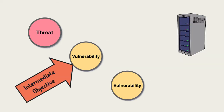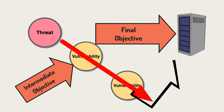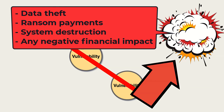Objectives are intermediate and final. Intermediate objectives include exploiting one or more weaknesses in a network, in a user population, or in a system. A threat actor often must exploit more than one vulnerability to reach the final objective. The final objective might include data theft, ransomware payments, information or system destruction, facility destruction, or other adverse business impacts.